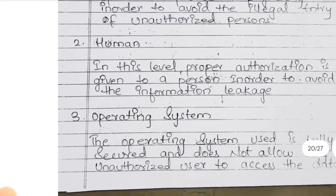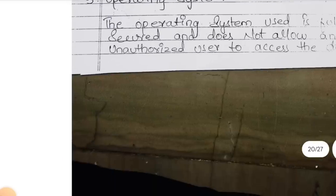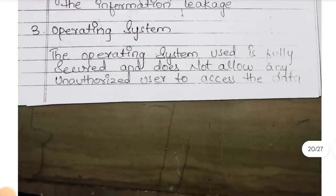Human — intended to avoid information leakage. We don't know if a person may tell others also. Through that, data can be leaked. Operating system: unauthorized users when they are trying to access the data, the operating system will work to prevent that.